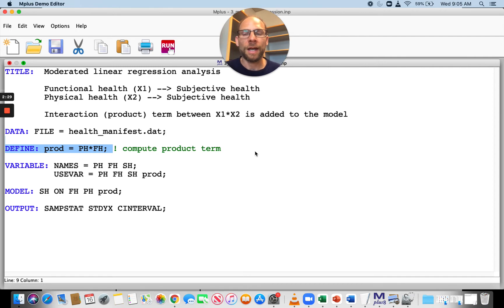So in this case, I have a model where my x1 variable is functional health or fh, my x2 predictor variable is physical health, and my dependent variable y is subjective health. So I'm predicting subjective health from functional health and physical health.